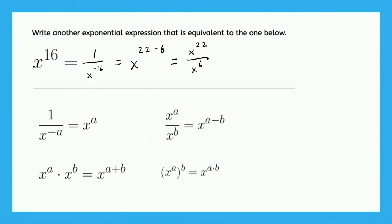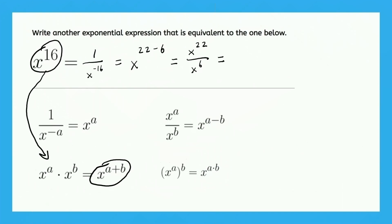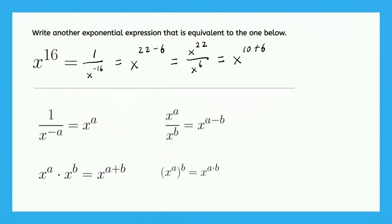What else could we do? We could think of x to the 16 in terms of this third property. Let's look at the right part of the equation right here. What plus what is 16? Well, let's just say 10 plus 6. And we could keep going on and on with all the different properties and all of the different differences and sums that will give us 16, so on and so forth. We could even look at all of the products and quotients that give us 16. The point is, there are many, many ways to rewrite an expression like this.